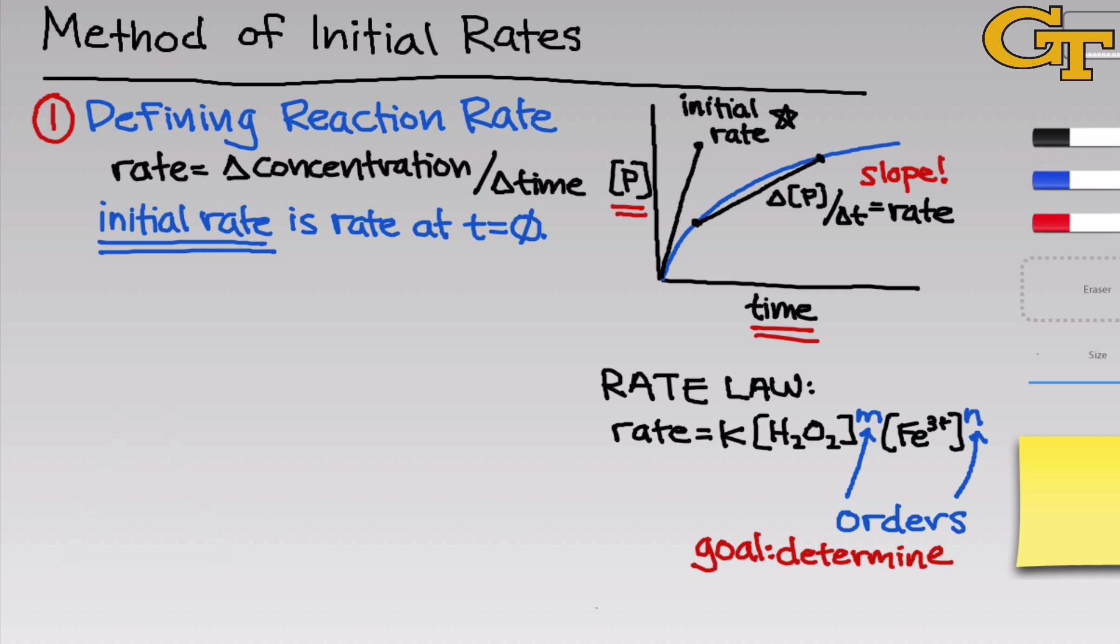To do this, we're going to apply the method of initial rates, which requires these initial rate measurements. So we're going to need a concentration versus time curve, or analogous data, as we'll talk about later. And we also need an understanding of the initial concentrations, the concentrations of reactants at that initial t equals zero time point. To understand that, we need to think a little bit about how the reaction is set up.